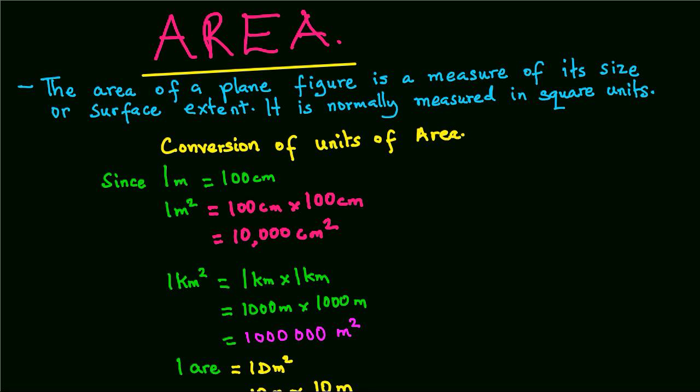Now, since 1 meter is equals to 100 centimeters, therefore it follows that 1 square meter will be 100 centimeters times 100 centimeters. So that gives us 10,000 square centimeters. So we can therefore conclude that 1 square meter is equivalent to 10,000 square centimeters.